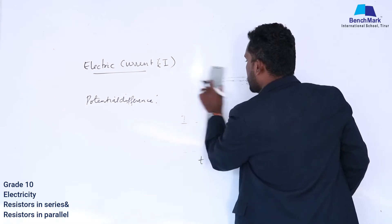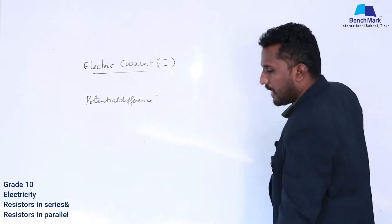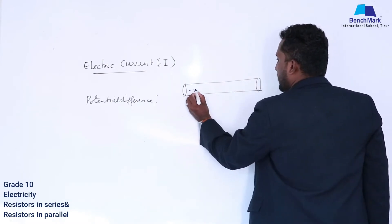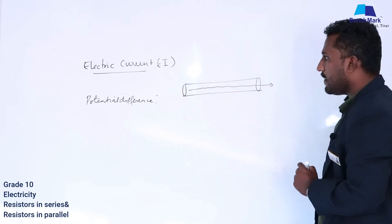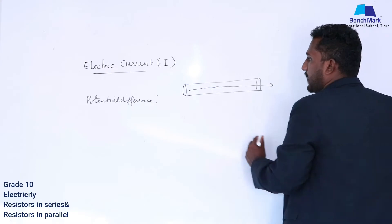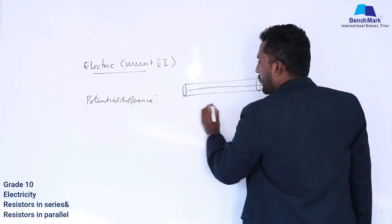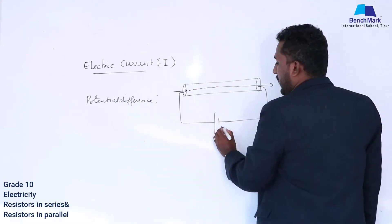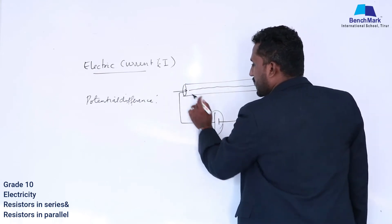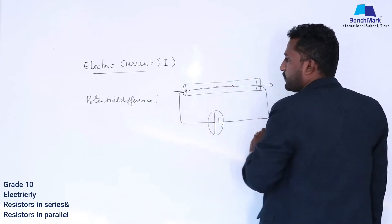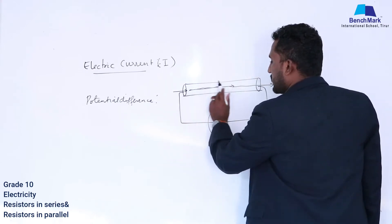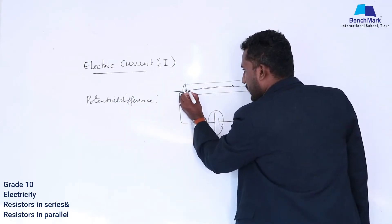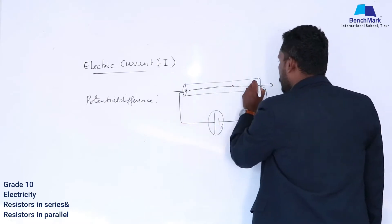Now let's discuss what is meant by potential difference. If this is the conductor, electric current is the flow of charges. But if I want to make this charge flow, I want to give some work done. If I apply a cell, the cell gives some work on the charge, then only the charge will move. Potential difference is the work done to move a charge from one point of the conductor to the other point.